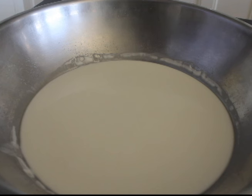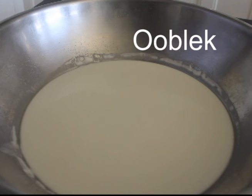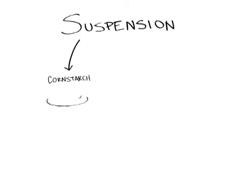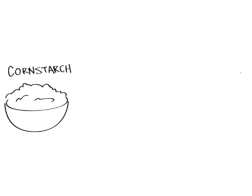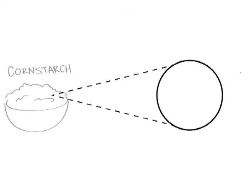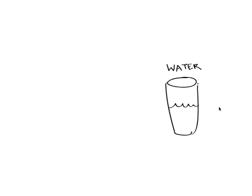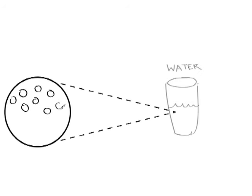This fluid here, known as oobleck, is a suspension of cornstarch in water. A suspension is a mixture of a solid and a liquid. In this case, cornstarch is going to be our solid and water is going to be our liquid. Cornstarch is a large, blocky molecule, which we will symbolize with rectangles in our drawings. Water, on the other hand, is a much smaller, rounder molecule than cornstarch, so we will visualize it as circles. When we combine these two, we get a suspension.